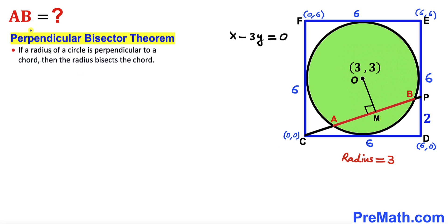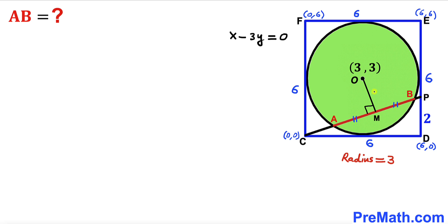In the next step, I drop a perpendicular OM from center O onto line CP. Recalling the perpendicular bisector theorem: if a radius of a circle is perpendicular to a chord, then the radius bisects the chord. Therefore this perpendicular OM bisects chord AB into two equal parts, so segment AM equals segment BM.